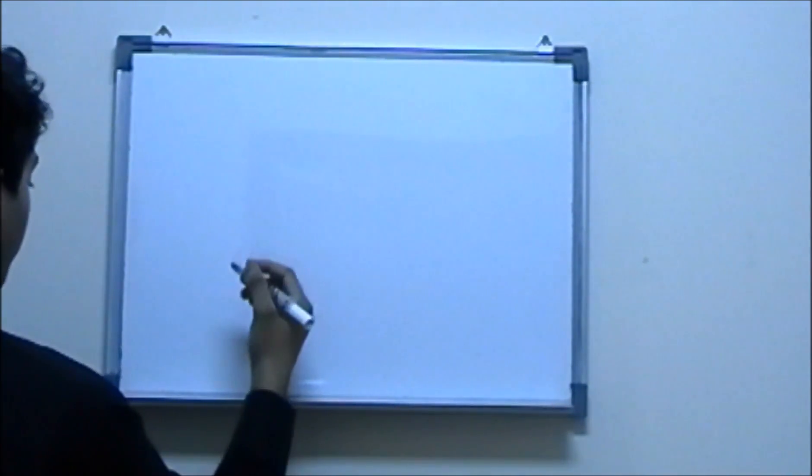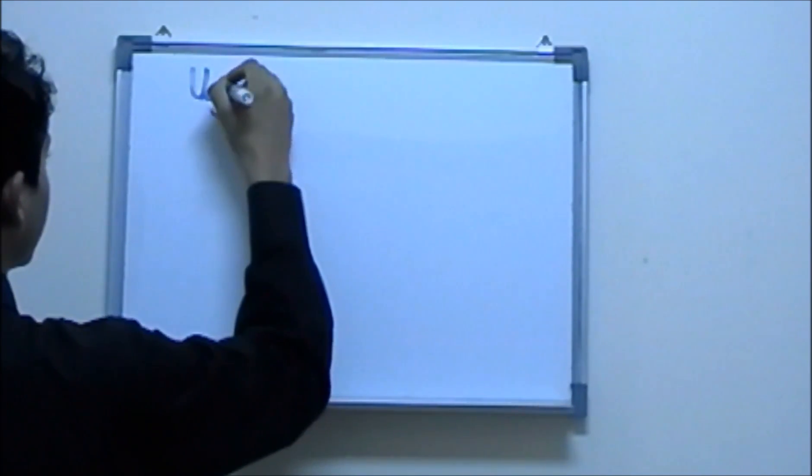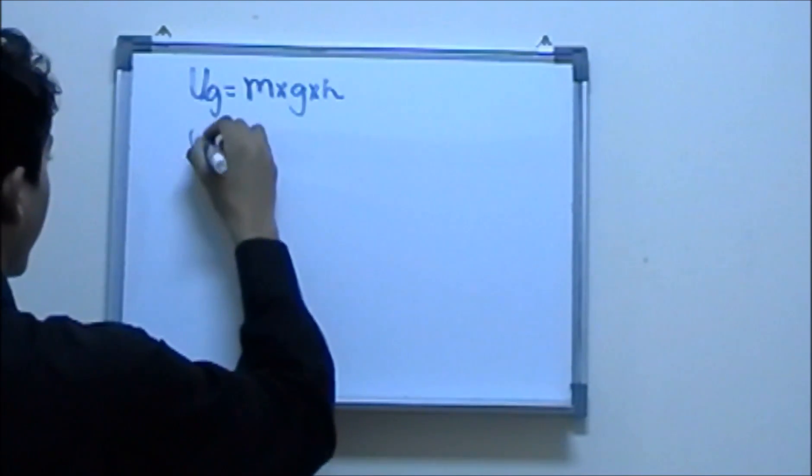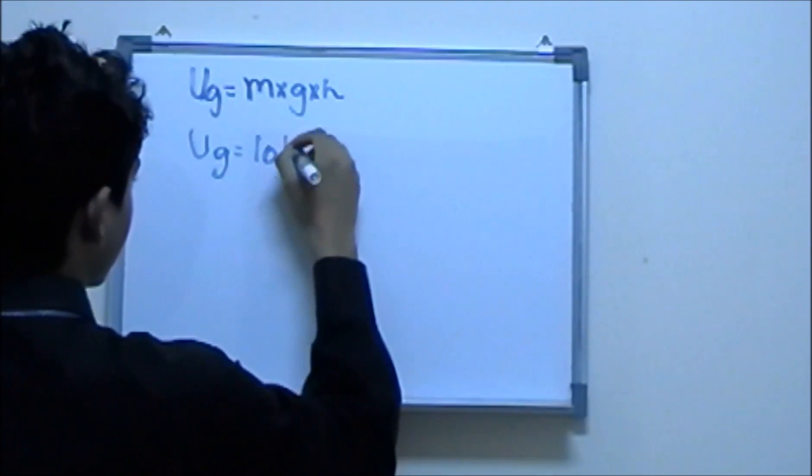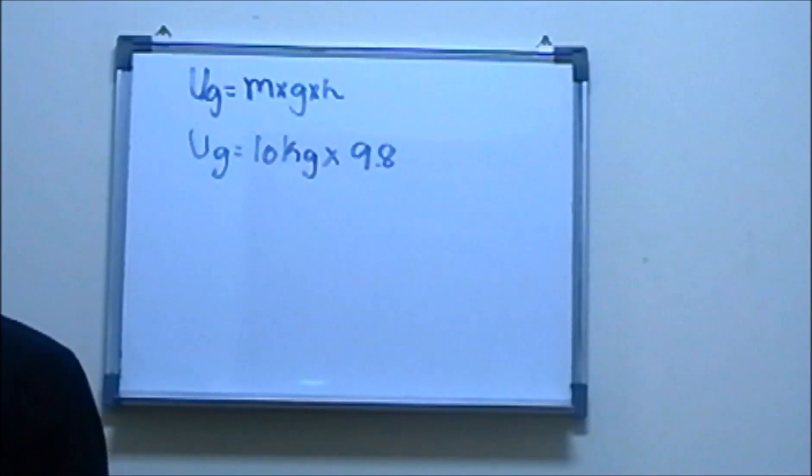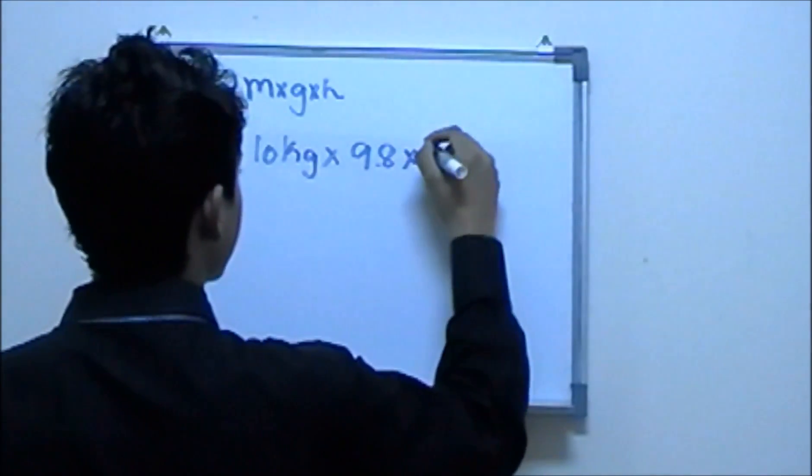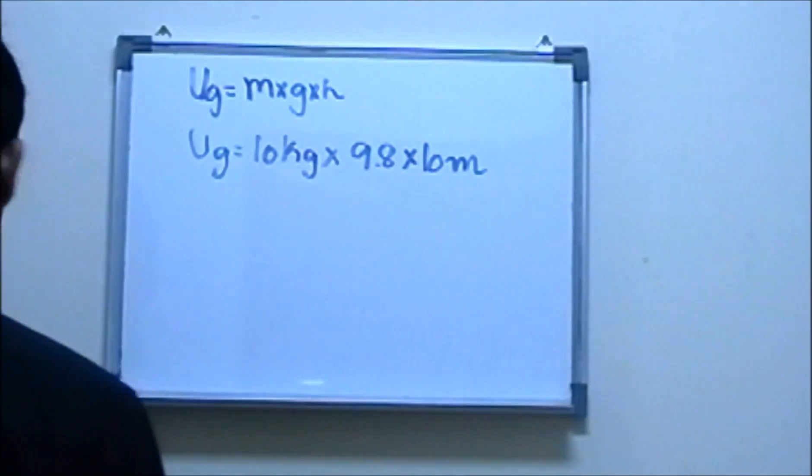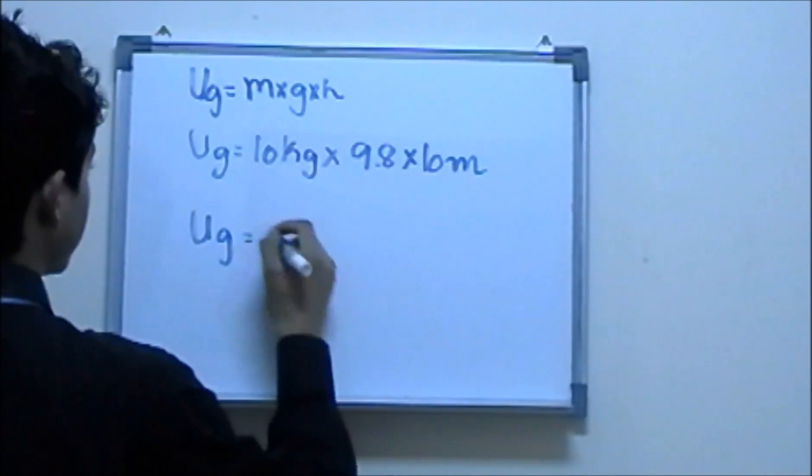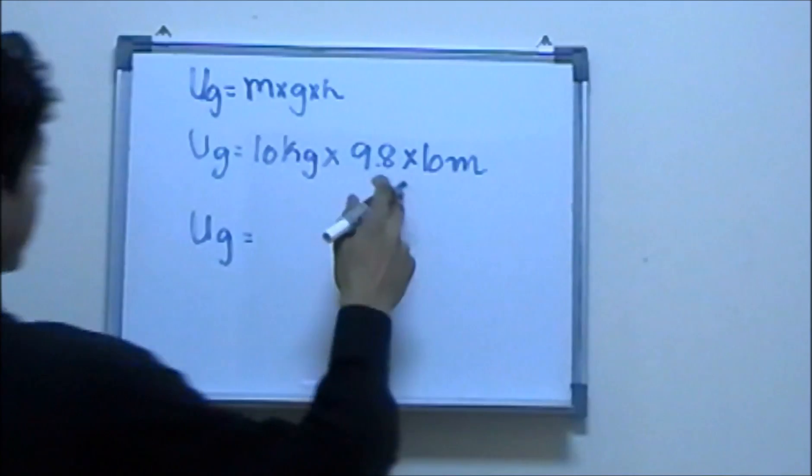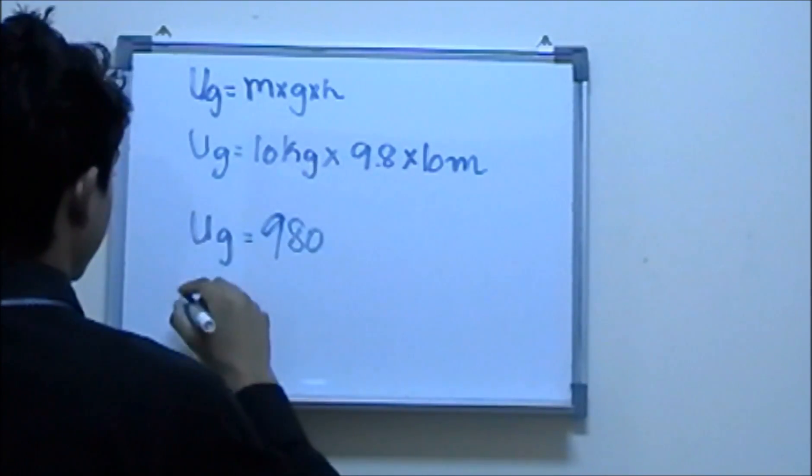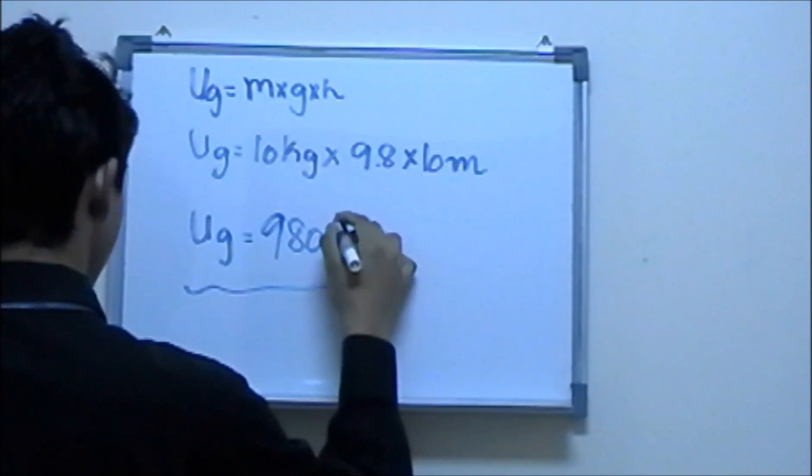It's really easy when you get hang of it. We know that gravitational potential energy is represented as UG, and UG is equal to mass times gravity times height. We know the mass is 10 kg, gravity is 9.8, and the height is 10 meters above the ground level. If you solve this you should be getting 9.8 times a thousand, which turned out to be 980 joules.